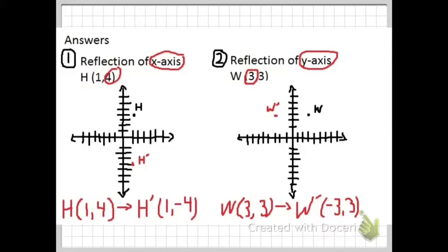Rotation is the clockwise and counterclockwise turn about a fixed point in the coordinates. Point W is at (3, 3). The answer will be (negative 3, 3) because it is on the x-axis and it will reflect and become negative.